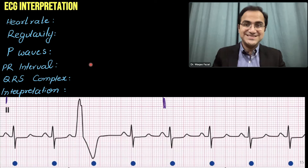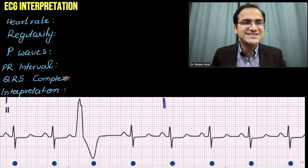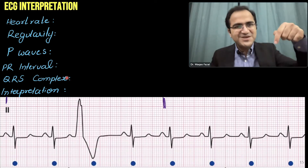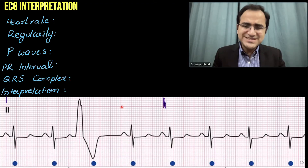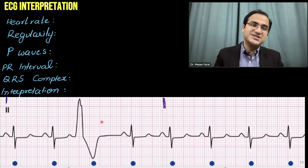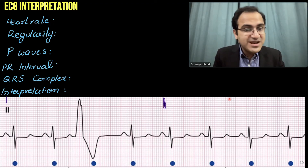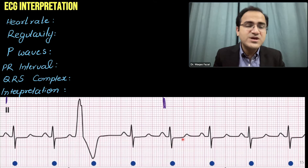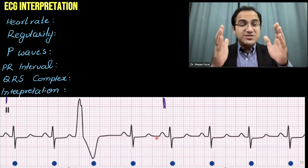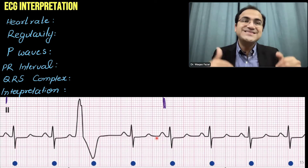Now let's solve some ECGs. Heart rate, regularity, P waves, PR interval, and QRS complexes are covered in detail in the rhythm determination video, linked in the description. For an irregular ECG, the heart rate is calculated by the six-second method: count 30 large boxes, count the number of QRS complexes within those boxes, and multiply by 10 to get beats per minute.